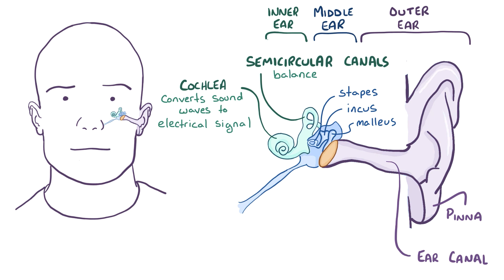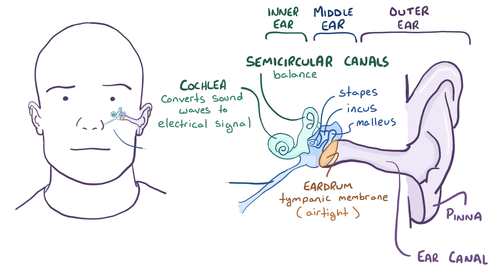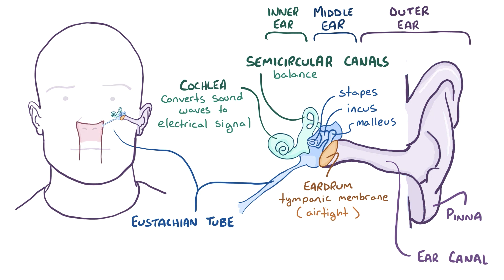Between the outer and middle ear is an eardrum, also called the tympanic membrane, so no air passes between the two areas. But the middle ear does have another possible outlet, called the eustachian tube, which acts like a valve connecting the middle ear to the nasopharynx.